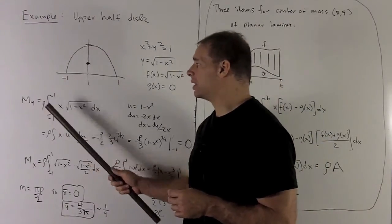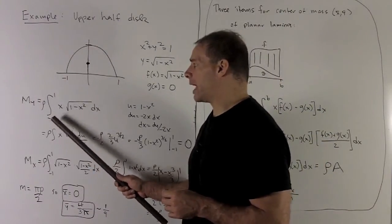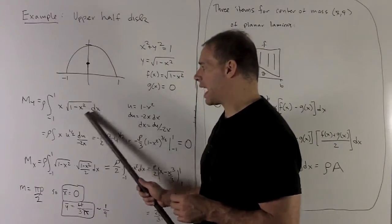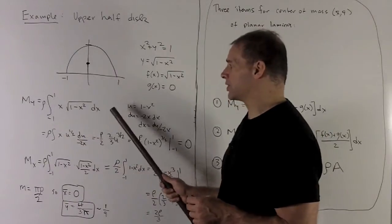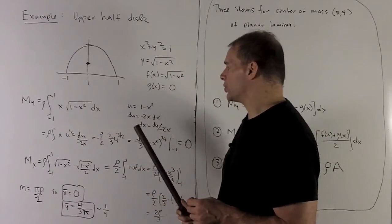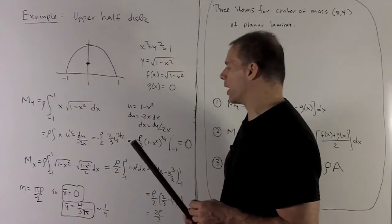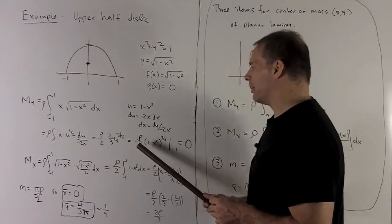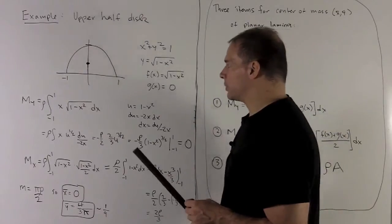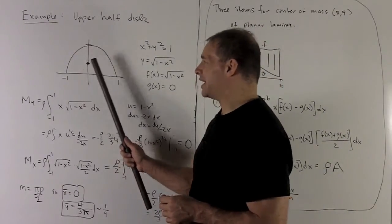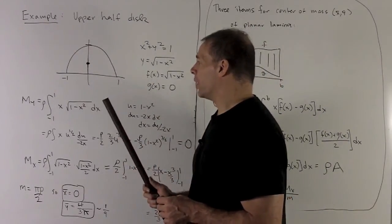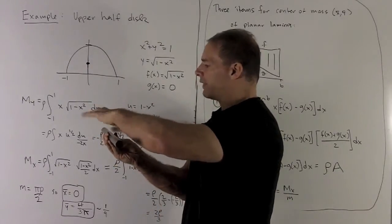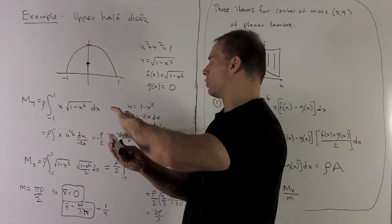Moment about the y-axis, it's going to be rho, definite integral from minus 1 to 1, x, top minus bottom. We only have a top here, and so we're just going to compute this. This is a u substitution. So I let u be equal to 1 minus x squared. We follow our nose. And at the end of the day, what's going to come out is a 0. This makes sense because this side is equal to this side. So if I take the y-axis, this is just saying we're balanced. If I go back and forth along, the y-axis is my fulcrum.